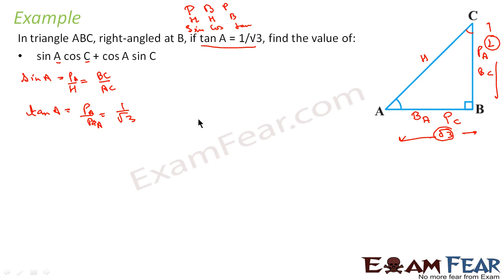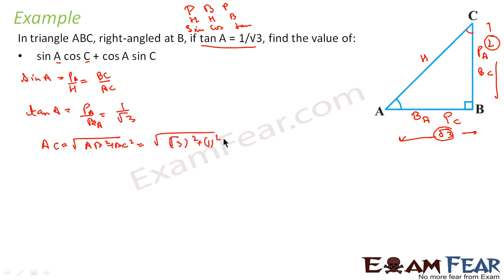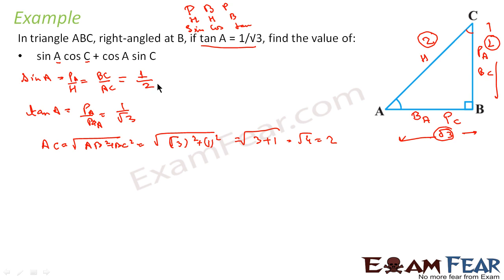We can now find AC using Pythagoras. AC is the hypotenuse, so AC equals root of (1 squared + root 3 squared) = root of (1 + 3) = 2. Going back to our equation, sin A equals BC by AC, which is 1 by 2.